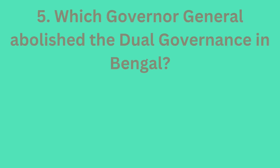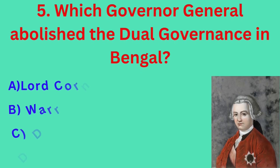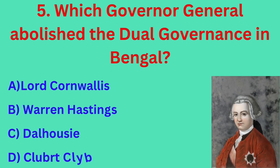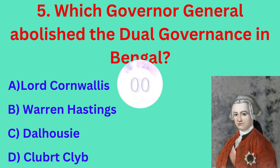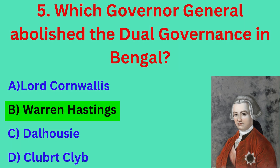Which Governor-General abolished the dual governance in Bengal? The correct answer is option B: Warren Hastings.